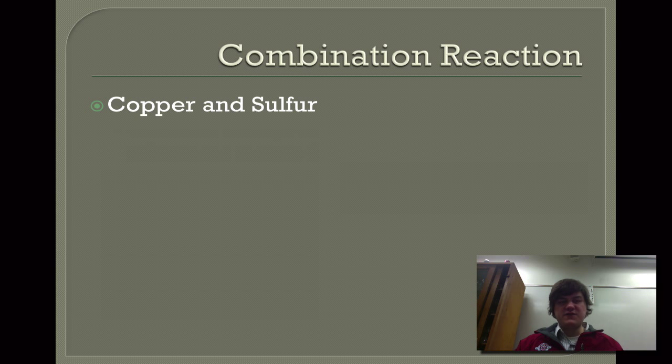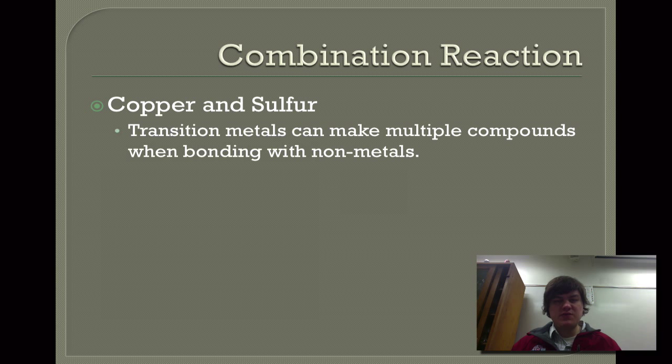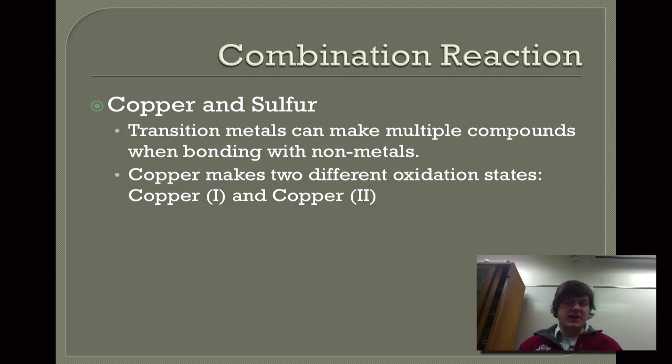We're going to talk about copper and sulfur. The reason I want to talk about copper and sulfur reacting in a combination reaction is because transition metals can be a little bit funny. They can have multiple oxidation states. Copper can form copper I and copper II, meaning it can have a one positive charge or a two positive charge, depending upon the conditions in which it reacts. This means that there are multiple different combination reactions between just copper and sulfur.